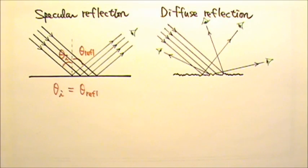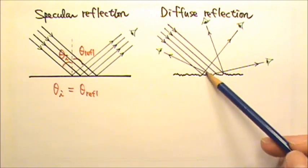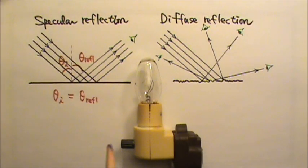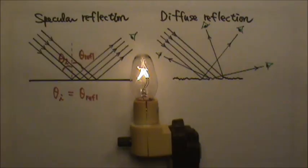When we see something, it means at least some light from that thing reaches our eyes. For example, we see the filament of this light bulb either because the light it reflects reaches our eyes or the light it emits reaches our eyes.